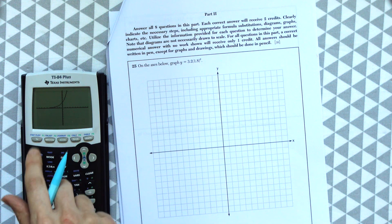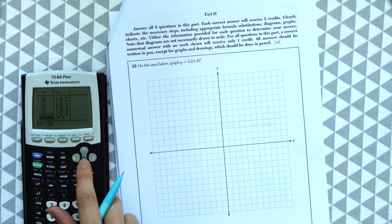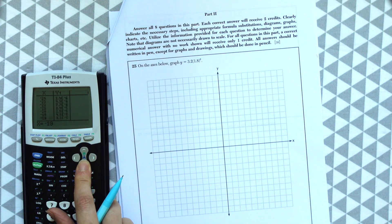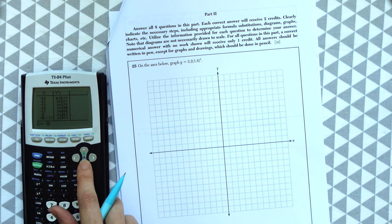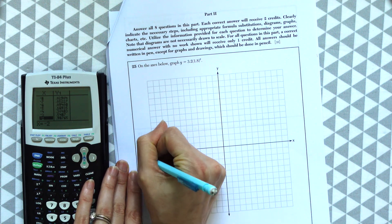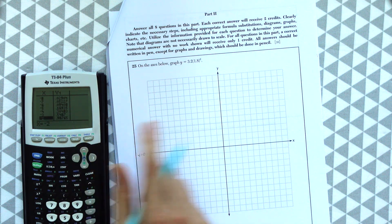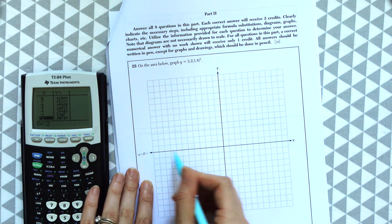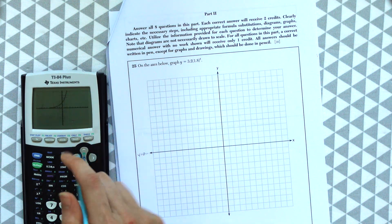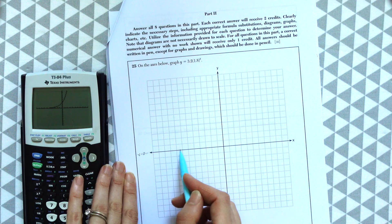So to get the coordinate points, we're just going to go second table, and then we have all these coordinate points. It looks like y equals 0, the x-axis is an asymptote. As we were scrolling down, you could see that we never actually hit 0. We just get closer and closer to 0.